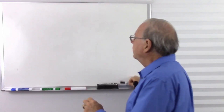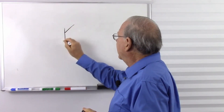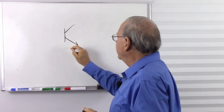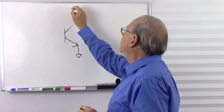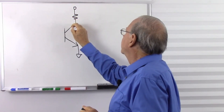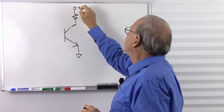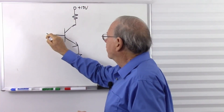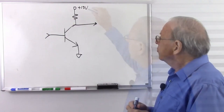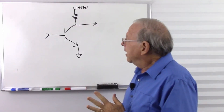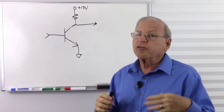I'll make a simple common emitter circuit here, and we'll take a look at how it works and why we say that they amplify current. There's our base input and our collector output.